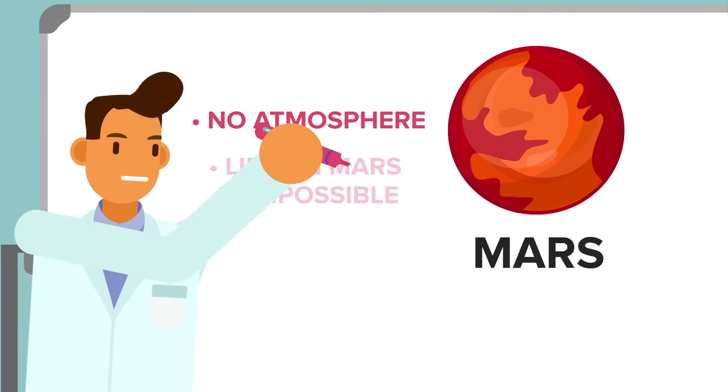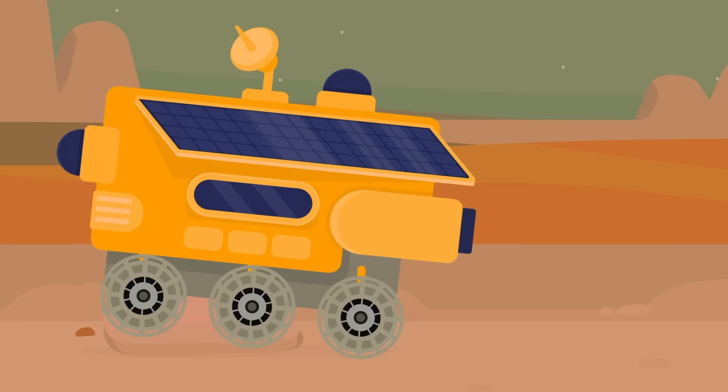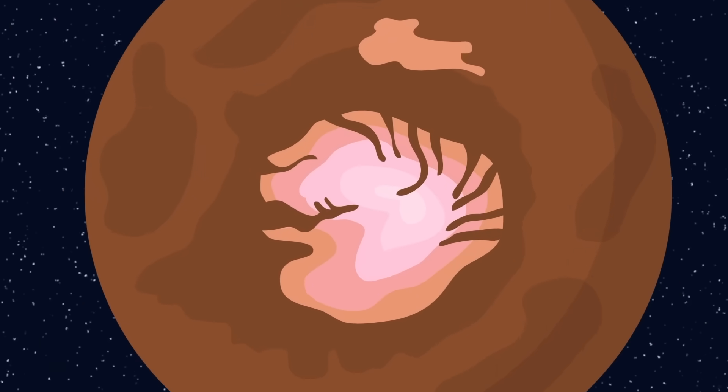Which makes it impossible for anything to currently live there, at least from what we've seen. Due to its cold temperature and the lack of an atmosphere, it also has no flowing water on the surface, with all its water coming in the form of ice. But that makes it easy to observe.